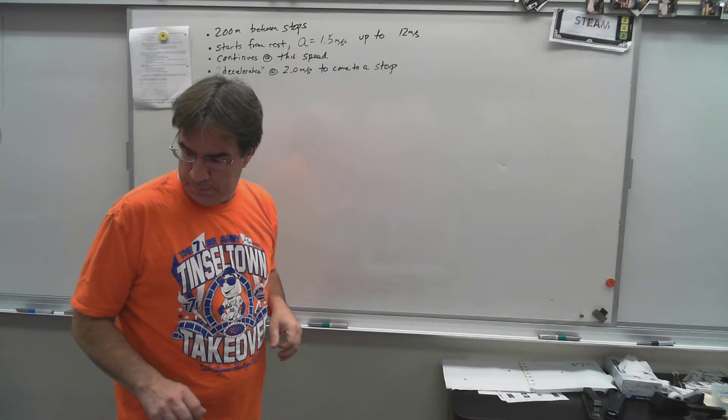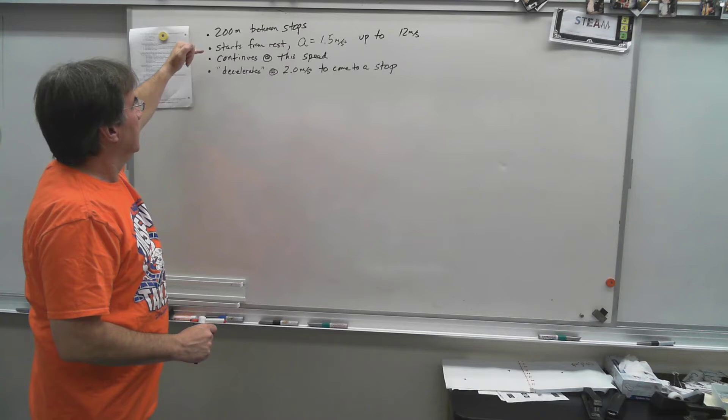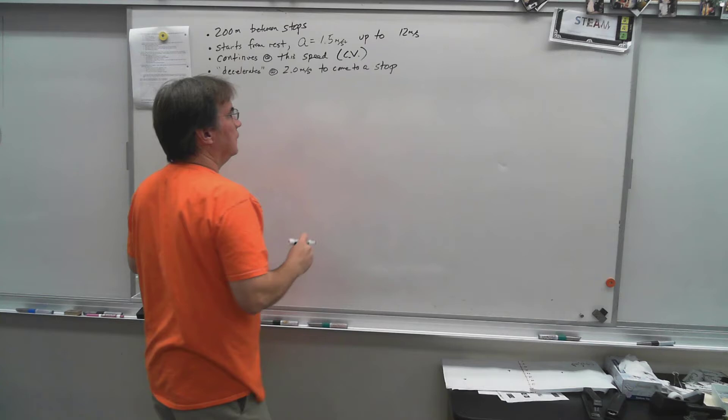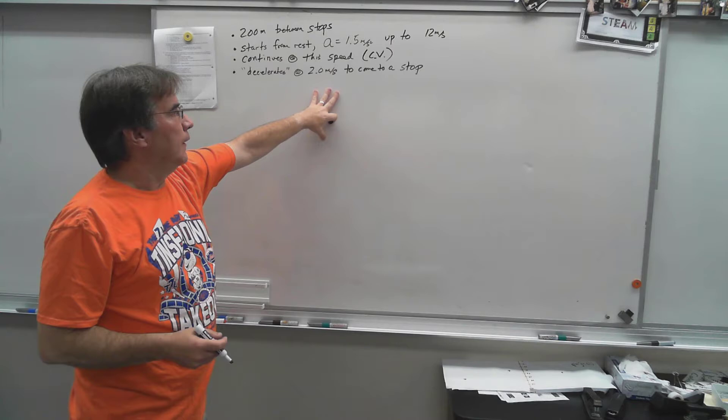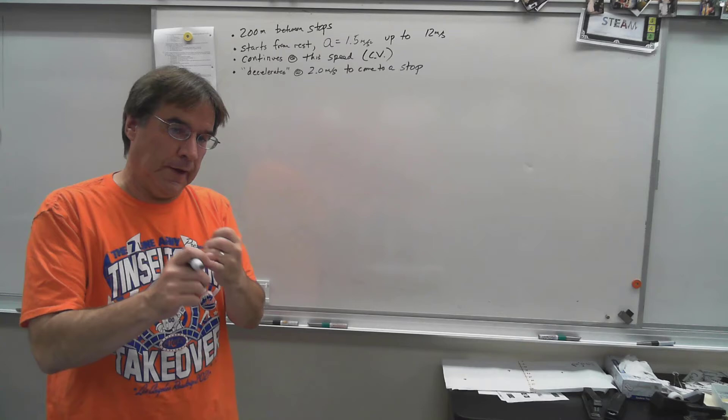First off, how many different motions are there? You got this one starting from rest and then accelerating up to 12 meters per second, then continuing at that speed meaning you're going at a constant velocity here, and then you're going to do another acceleration but a slowing down here to come to a stop. So we've got to treat these as three separate motions.